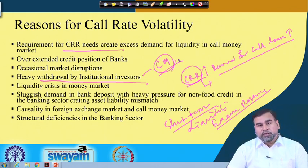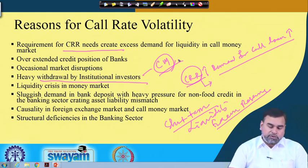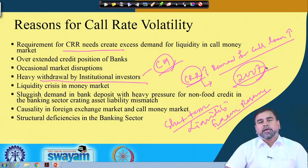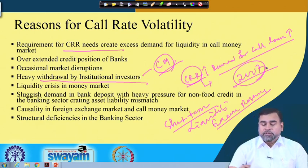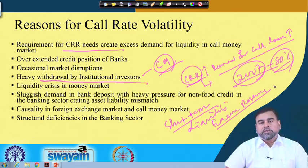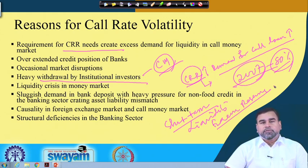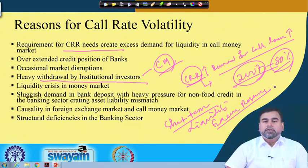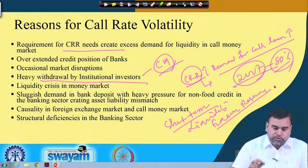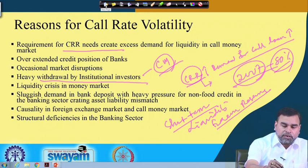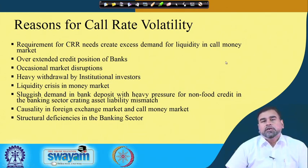The weighted average call money rate in 2007 was 80%. Analyzing 2007 data reveals crisis-related factors that heavily affected the call money rate. These various reasons affect demand and supply of call loans, making call money rates volatile — they are highly affected by changes occurring in the economic system as a whole.